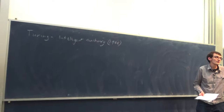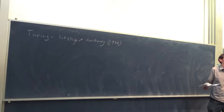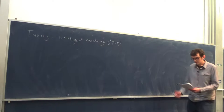When you write a program normally and it does something clever, usually that's just because the programmer told it to do something clever. Whereas really what Turing is interested in is whether a machine can develop its own intelligent behaviour through minimal training.